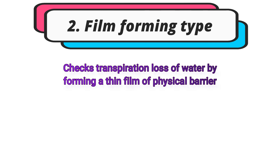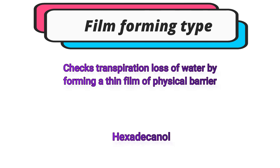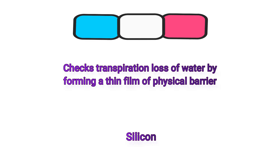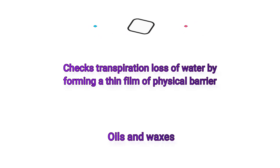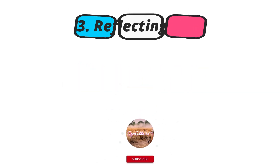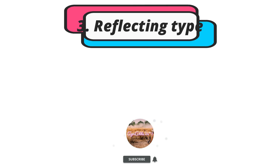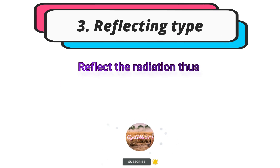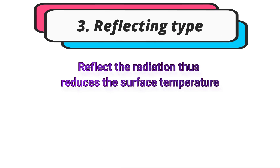The examples of film forming type antitranspirants are mobileaf, hexadecanol, silicon oils, and waxes. The third type is the reflecting type. These chemicals reflect radiation and reduce the leaf temperature, which in turn reduces transpiration.